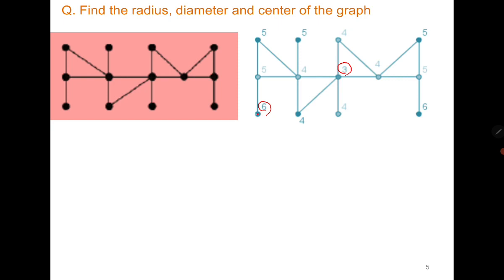The eccentricity of a particular vertex is 6 because starting from that vertex you compute its distance to all other vertices: 1, 2, 2, 3, 3, 3, 4, 4, 4, 5, 5, and 6. So when you compute the distance from this vertex to all other vertices, the maximum distance is 6, and therefore its eccentricity is 6.